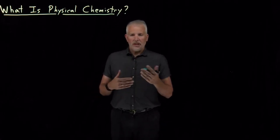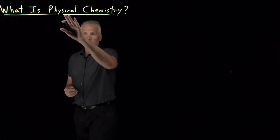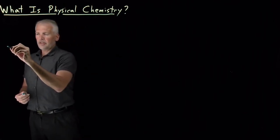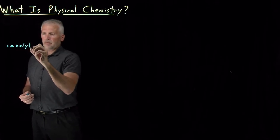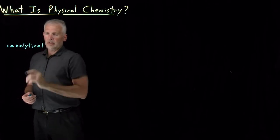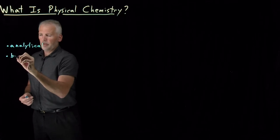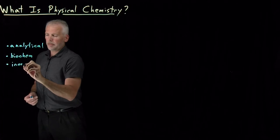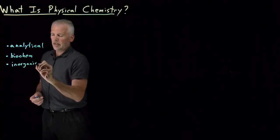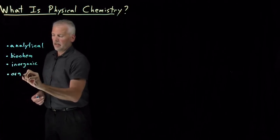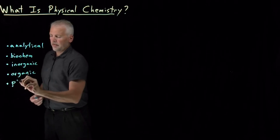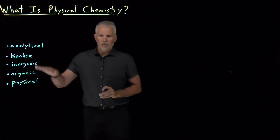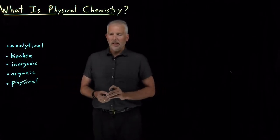One way to answer that question is to list the various sub-disciplines of chemistry. Physical chemistry is a sub-discipline of chemistry as a whole. There's a number of different sub-disciplines: analytical chemistry, biochemistry, inorganic and organic chemistry, in addition to physical chemistry. That's a fairly common way of breaking up the topics in chemistry.